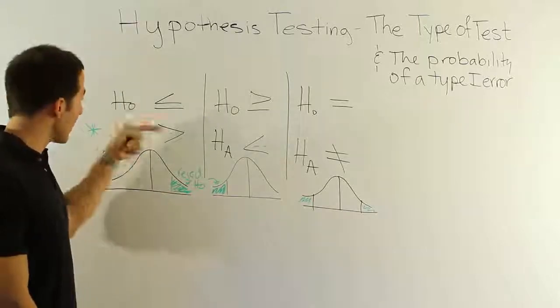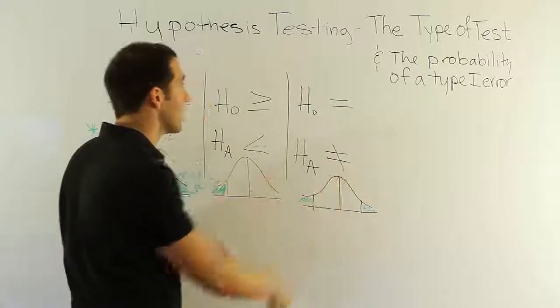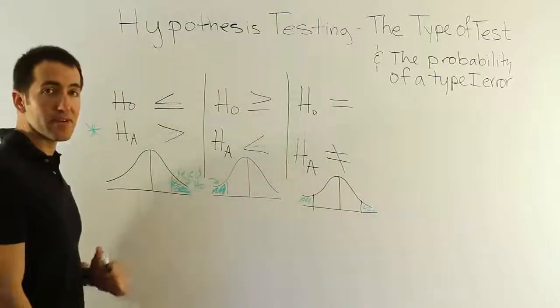So those are the three scenarios. Very easy. Right-tailed test, left-tailed test, two tails. Because remember the two bars, two tails. And that's how you know the type of test you're going to be conducting.